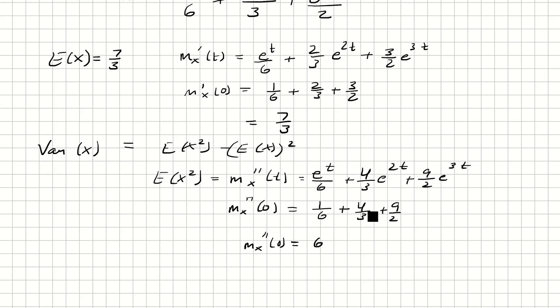We go back and compute the variance: E[X²] minus (E[X])² equals 6 minus (7/3)², which is 6 minus 49/9, giving us 5/9.